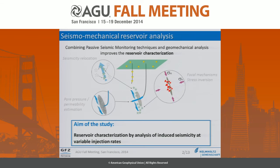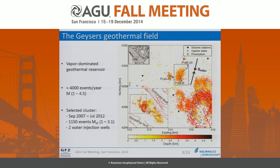In this study, our main goal is to improve the reservoir characterization at the Geysers by analysis of induced seismicity occurring at variable injection rates. We are using data from the Geysers that was previously introduced. It is a mostly vapor-dominated reservoir, during which an approximate rate of 4,000 events per year occur with magnitudes between 1 and 4.5.